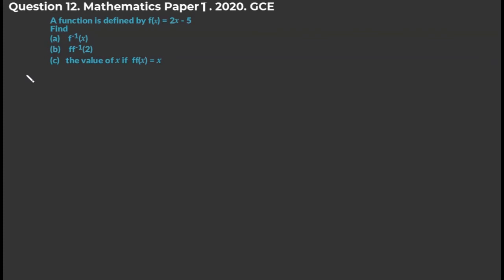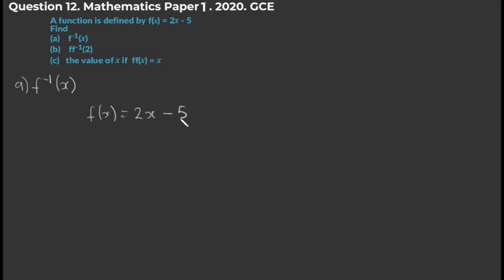In particular, we've been asked to find the inverse of f(x). We know we're finding the inverse because of the small negative one superscript added to the question. When we want to find the inverse, the first thing we do is look at the function. So f(x) = 2x − 5. Where we have f(x), we're going to replace it with y.